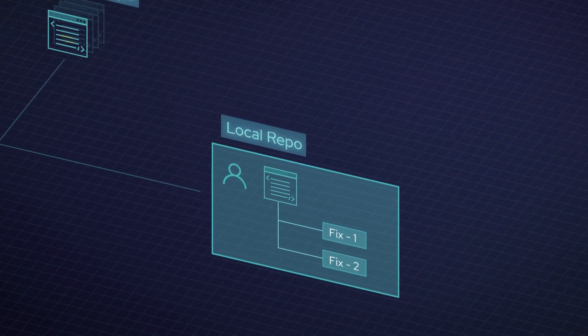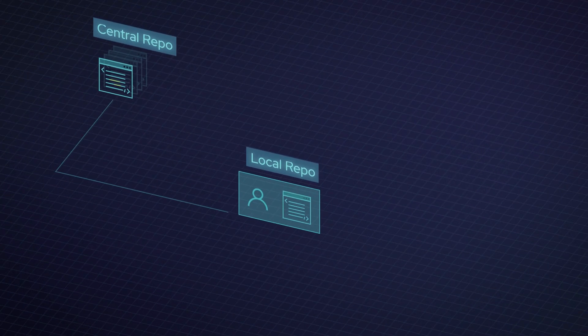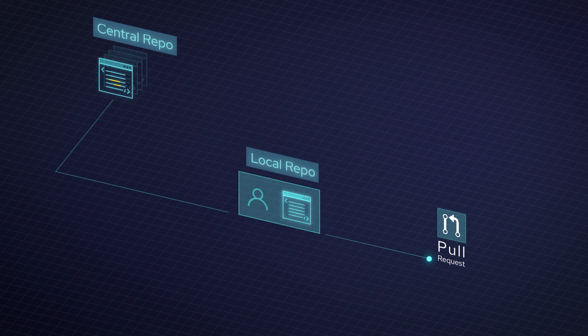So now you have everything that upstream has and you can make your own changes — update it, fix bugs, add features, whatever you want to do. Then you push that branch up to your GitHub repo, and from there you can submit a pull request. When you submit a pull request, it's your branch against an upstream branch. You have to go on GitHub where it registers those changes and actually hit a button that says 'open a pull request'.